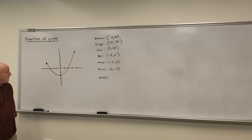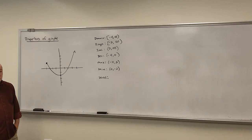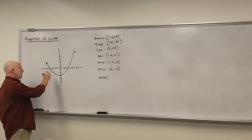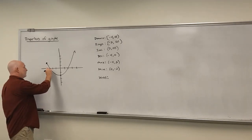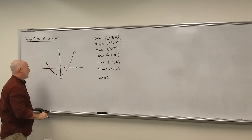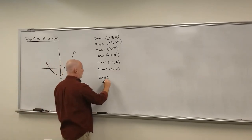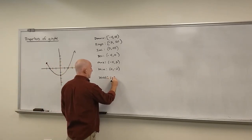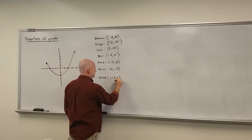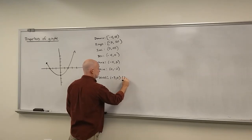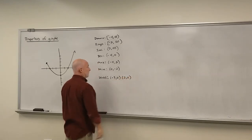Do we have any x-intercepts or zeros? Yes, it looks like we have two: one at (−3, 0) and one at (2, 0).